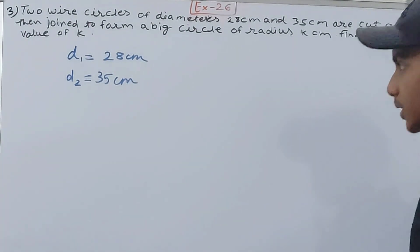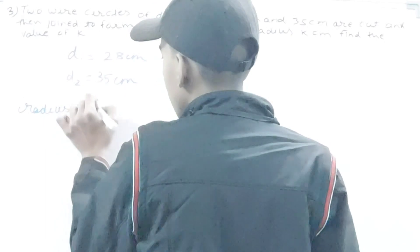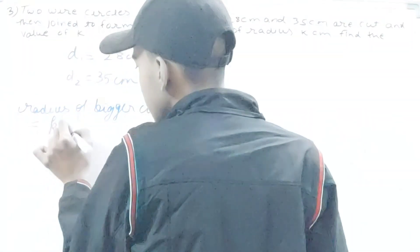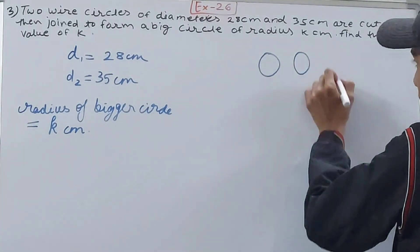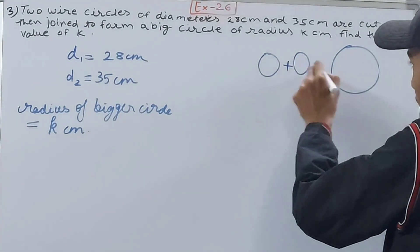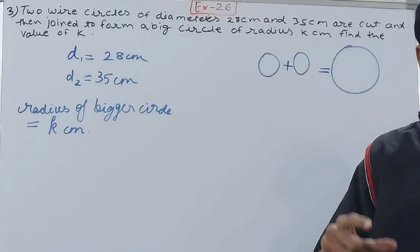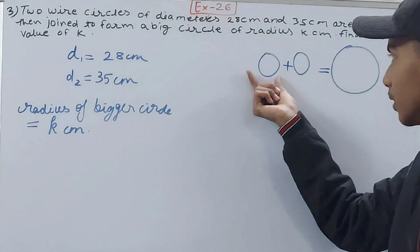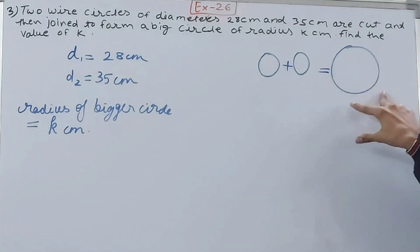The radius of the bigger circle is k centimeters. Now see, I have these two small wire circles and then one very big wire circle. These two are being cut and joined to give you this bigger circle, so basically the circumference will increase. This circumference will be more than one circle, but if I add the circumference of these two circles, that will give me the circumference of the bigger circle.